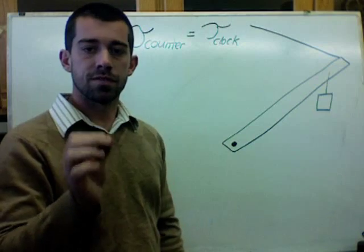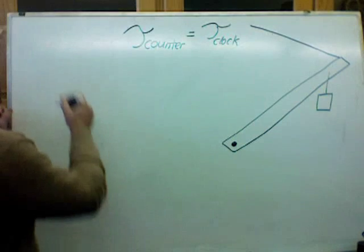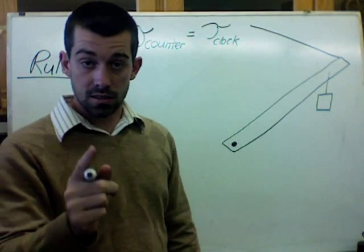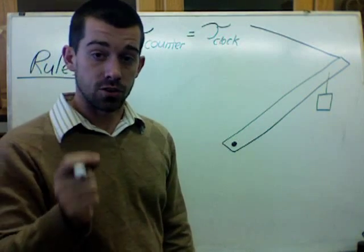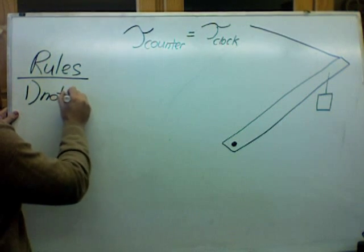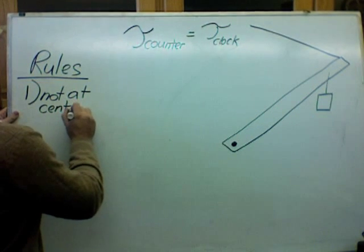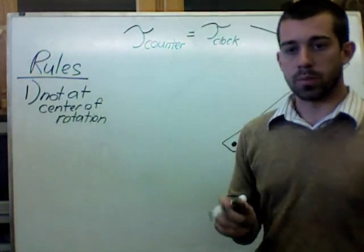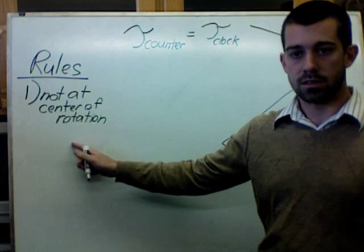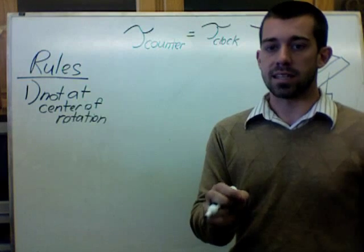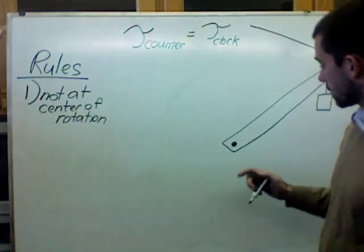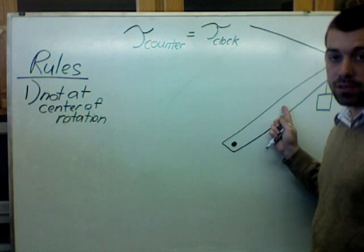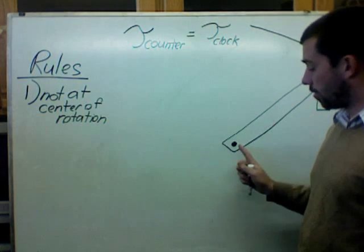There are some rules to figuring out what torque is applied to this truss. The first rule is that the torque cannot be applied at the center of rotation. In order for a force to apply a torque, it has to be somewhere other than the center of rotation — that doesn't mean it can't be at the center of the object, it means it can't be at the center of rotation. For example, this is the center of rotation of the crane arm — the point it wants to rotate around. A force at the center of the crane arm can apply a torque, but a force at the center of rotation cannot.